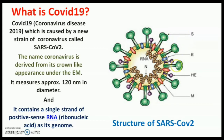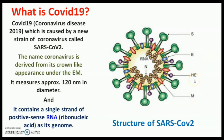There are other spike proteins also, like the E-protein and N-protein. E stands for envelope and N stands for nucleocapsid. There is also an HE protein. The spiral RNA is coated with a spiral protein capsule as well. So this is the structure of the virus.